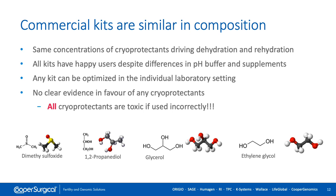Commercial kits are rather similar in composition. There are four most-used permeable cryoprotectants: DMSO, propanediol, ethylene glycol, and glycerol, along with different sugars used as non-permeable cryoprotectants. Glycerol is mostly used in kits for sperm freezing. Propanediol in combination with DMSO or ethylene glycol are the main components for vitrification kits. All cryoprotectants drive dehydration and rehydration processes in the cells. Despite differences in pH buffers, supplements, and slight protocol differences, all kits have successful users and can be optimized for individual laboratory settings. There is still no clear difference in favor of one cryoprotectant over another, but all cryoprotectants can be toxic if used incorrectly.